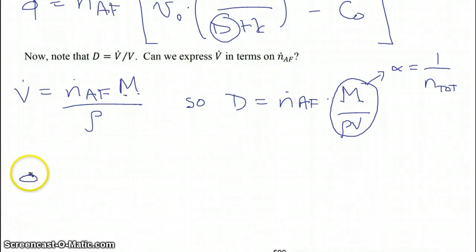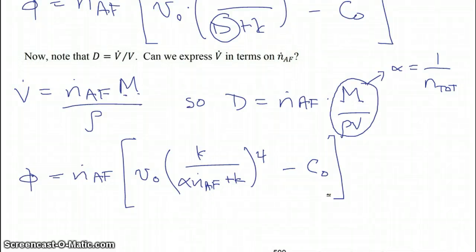So once we have this function for D, what we finally get for a profit function is phi is equal to N dot A feed times V0 K over alpha N dot A feed plus K raised to the fourth power minus C0. So that's our profit function as a function of N dot A feed.